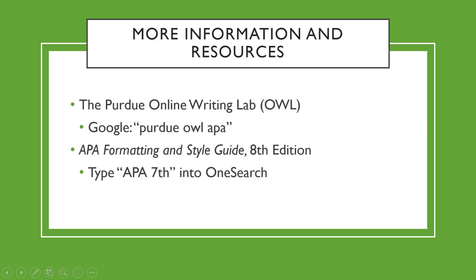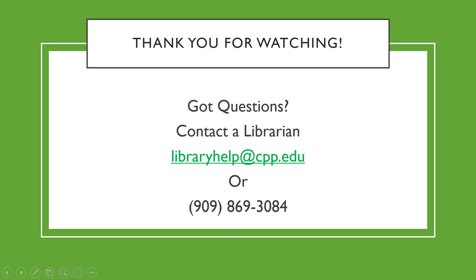Obviously there are a lot more types of sources to cite than just books, and a lot more situations for citing books than we've covered in this brief video. If this video didn't answer your question, there are more resources available. The Purdue Online Writing Lab, or OWL for short, provides an excellent website covering many different scenarios and rules for APA citation — simply type Purdue OWL APA into Google or the search engine of your choice. You can also reference the APA Publishing and Style Guide itself by typing APA 7 into OneSearch. Finally, you can always contact a librarian for citation assistance at libraryhelp1word at cpp.edu. Thank you for watching!